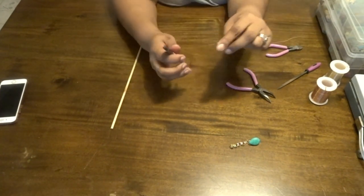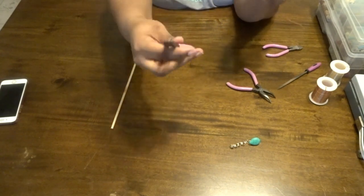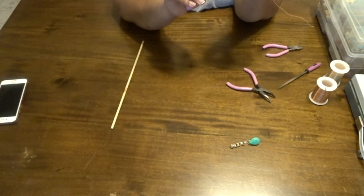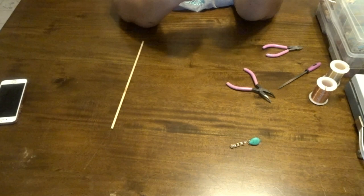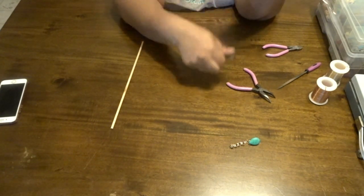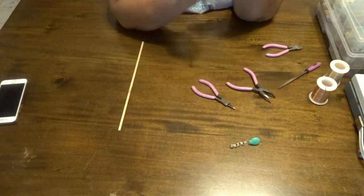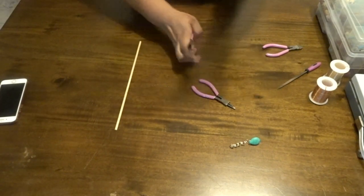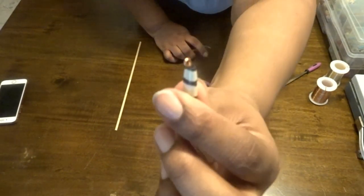So let's go ahead and take the round nose pliers, make a loop at the end just like we did before. Give it that nice finish. Now let me come in closer because what I'm going to do to the end of this is a little different.